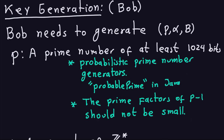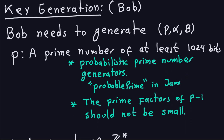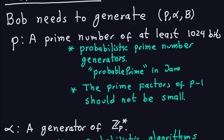The prime number has to be at least 1024 bits. This is for security reasons — otherwise, using discrete logs, you can actually break the Elgamal scheme. One of the things you do to generate random prime numbers of 1024 bits is use probabilistic algorithms, such as the probable prime in Java, or any other prime number generators.